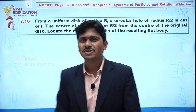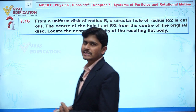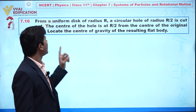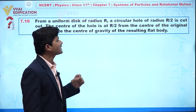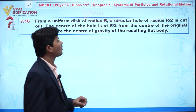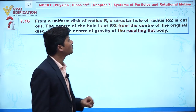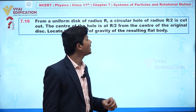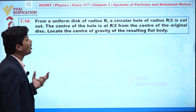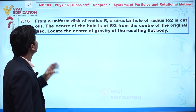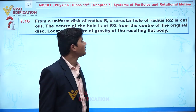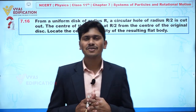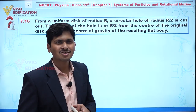We are going to discuss question number 7.16. In this question, from a uniform disc of radius R, a circular hole of radius R/2 is cut out. The center of the hole is at R/2 from the center of the original disc. We need to locate the center of gravity of the resultant flat body.